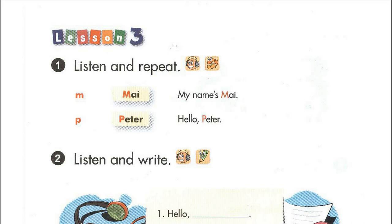Page 16. Lesson 3. Activity 1. Listen and repeat. M. My. My name's Mai. P. Peter. P. Peter. Hello, Peter.